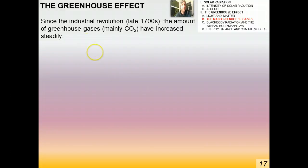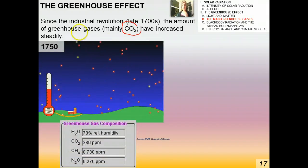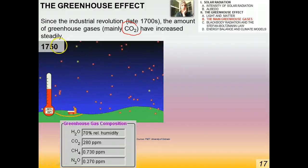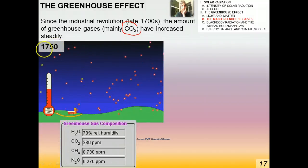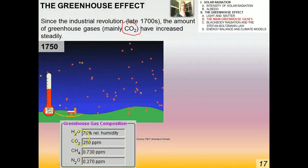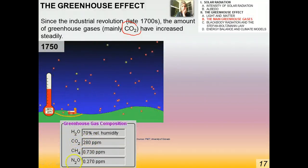Since the Industrial Revolution in the late 1700s, the amount of greenhouse gases — mainly CO2 — has increased steadily. There's no debate about that. In the PhET simulation, which we'll play with in class, a GIF shows the greenhouse effect being simulated in 1750, before or just as the Industrial Revolution was getting started. You can see the relative concentrations in parts per million by volume of CO2, methane, and nitrous oxide at that time.